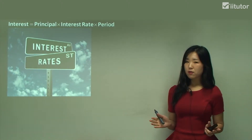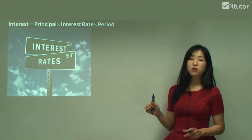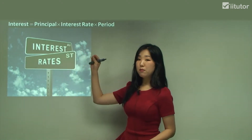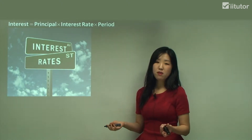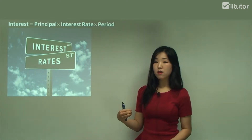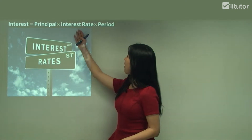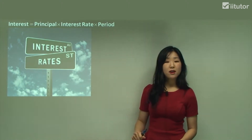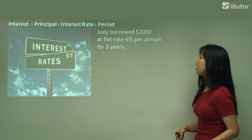We have two different types of interest: simple interest and compound interest. Here we're only going to focus on simple interest. The formula is: Interest = Principal × Rate × Period. The principal is the amount we borrow — the price of the item. The rate is the interest rate specified, such as ten percent or five percent. The period is how long you're borrowing for — it could be years or months. That's all you need: principal times rate times period.